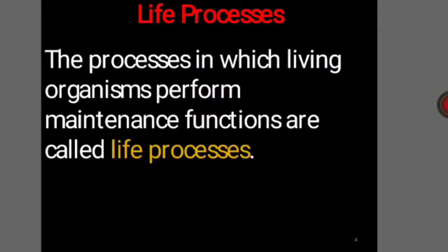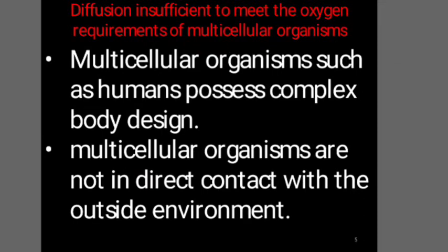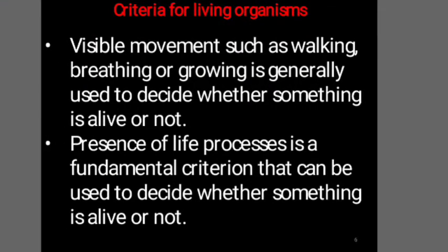Let us learn this chapter, life processes, by following these slides. The processes in which living organisms perform maintenance functions are called life processes. In lower organisms, a process called diffusion is sufficient to carry out all the life processes. But in multicellular organisms like human beings, it needs a complex body design with special organ systems. A visible movement such as walking, breathing, or growing is generally used to decide whether something is alive or not. Presence of a life process is a fundamental criterion to decide whether something is alive or not.